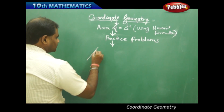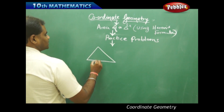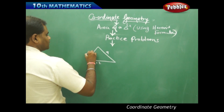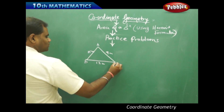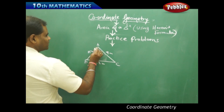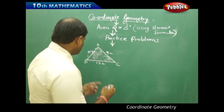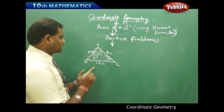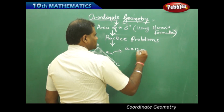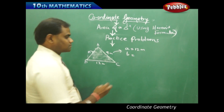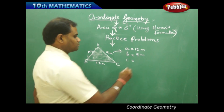Consider a triangle ABC whose dimensions are given as 12, 9, and 15 meters. In order to find the area of this triangle ABC, I am going to use Heron's formula, where side A is 12 meters (the side opposite to vertex A), side B is 9 meters, and side C is 15 meters.